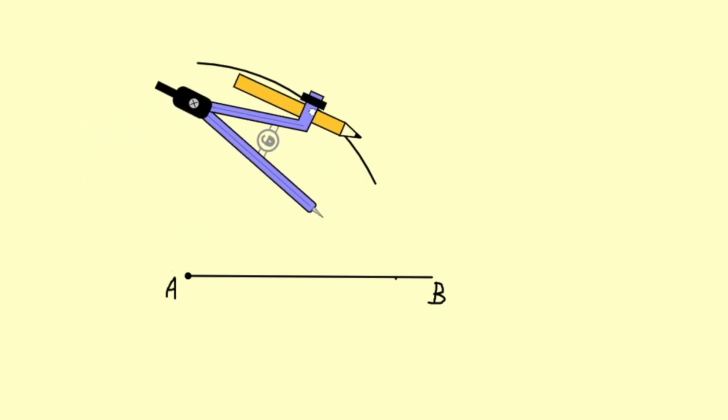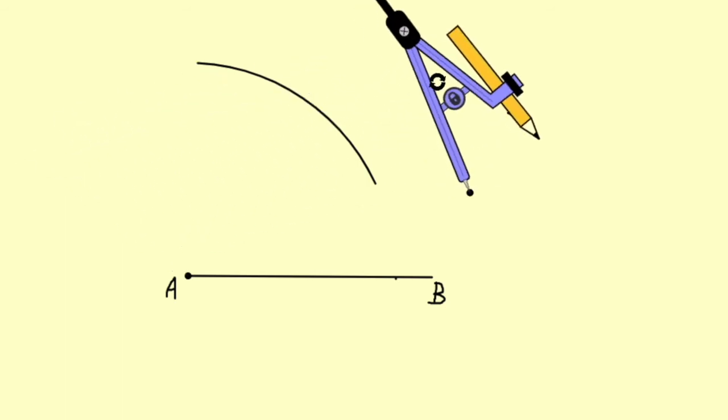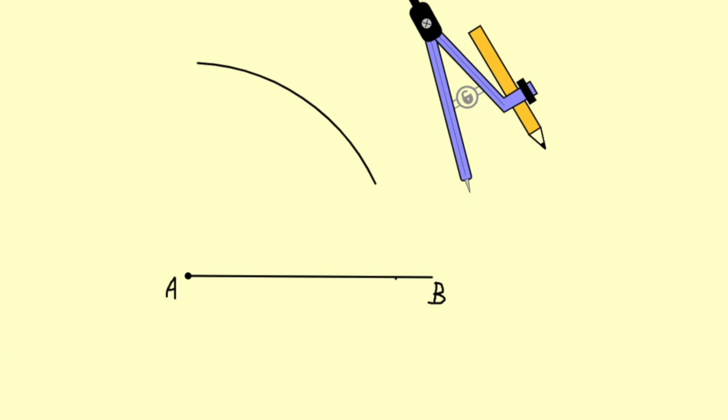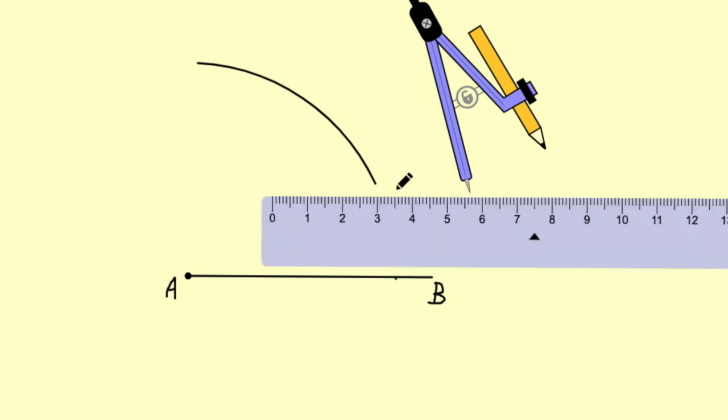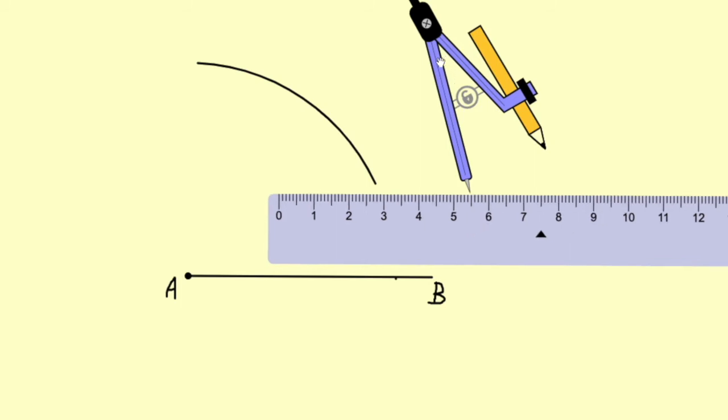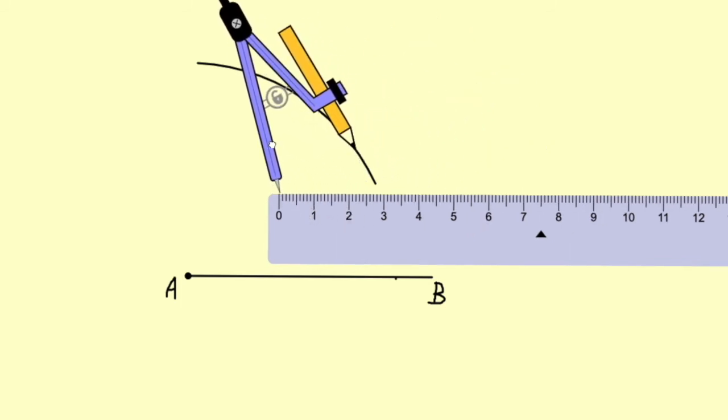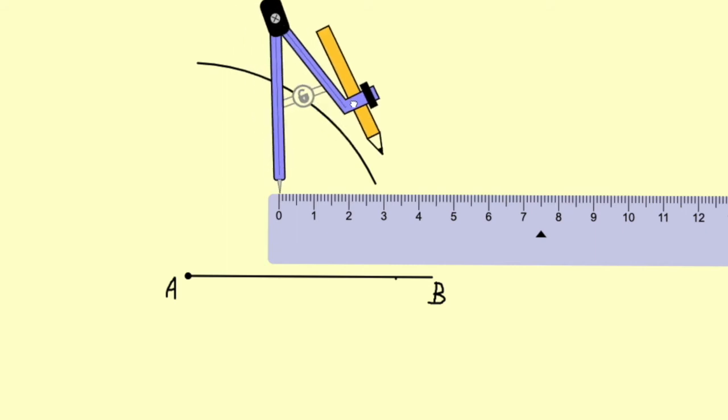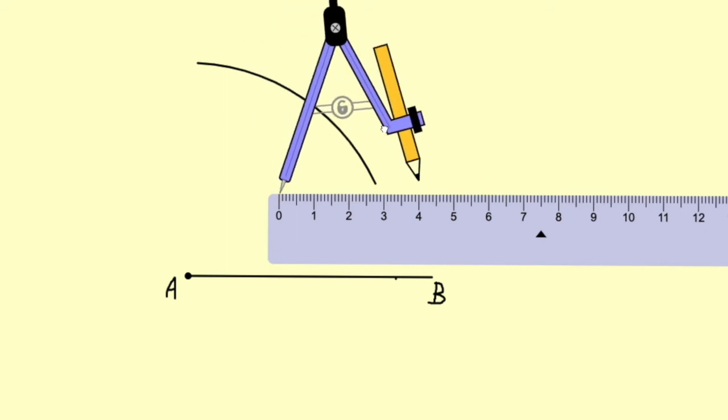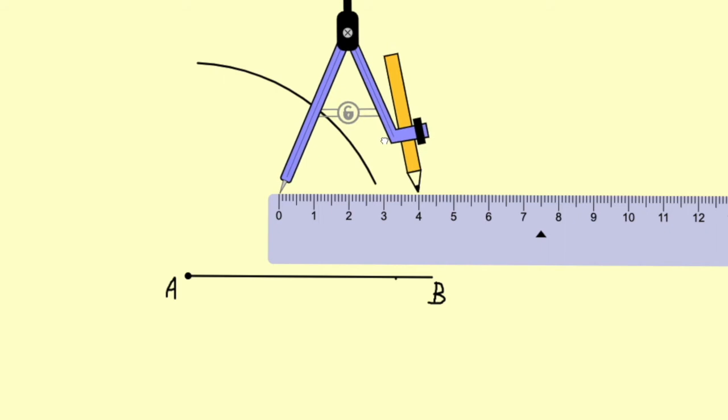The next side is 4 cm. So we'll take the scale and in that we will take the measure in the compass as 4 cm. So here we will measure 4 cm. This is 4 cm.